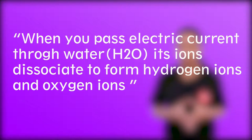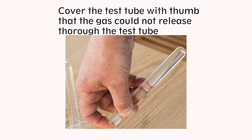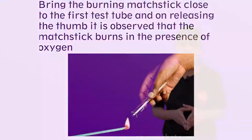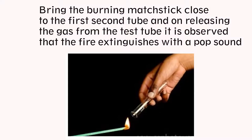After a few minutes, you will observe that bubbles are formed in the glass test tubes. What are these bubbles of? Basically, when you pass current through water, that is H2O, its ions dissociate to form hydrogen ions and oxygen ions. So the bubbles formed must be of hydrogen and oxygen. To test that, we take a burning matchstick near the test tube. We cover the test tube with a thumb so that the gas cannot release. When we bring the burning matchstick close to the first test tube and release the thumb, you will see that the matchstick burns vigorously in the presence of oxygen. This indicates that the first test tube consists of oxygen. Now, when you release the gas from the second test tube, you will observe that the fire extinguishes with a pop sound. This indicates that the second test tube consists of hydrogen.